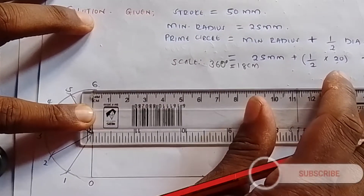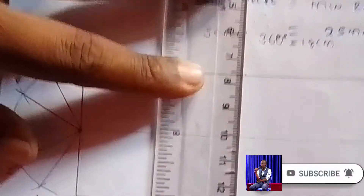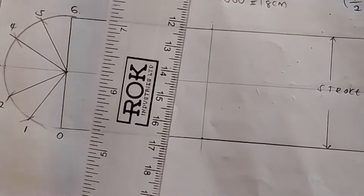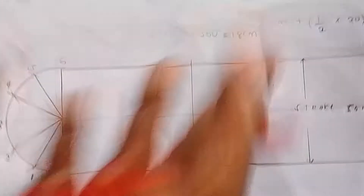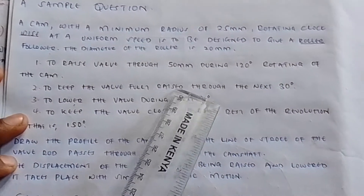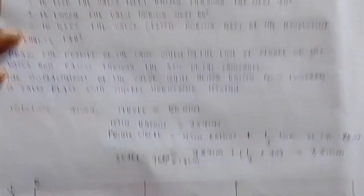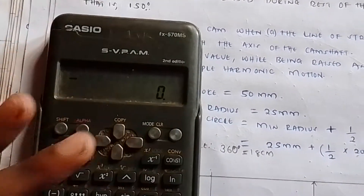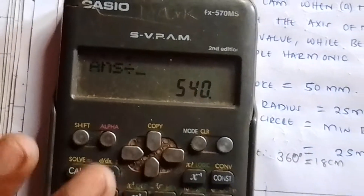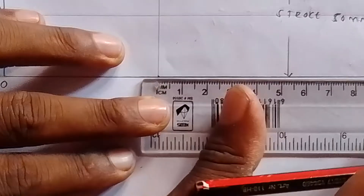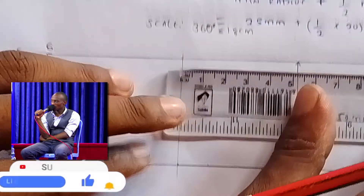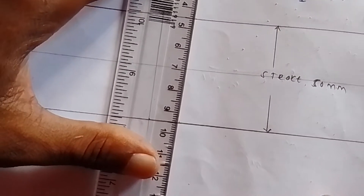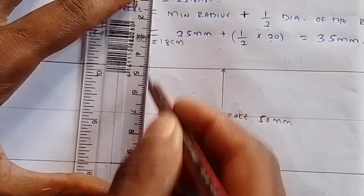From the top of the rise, do the same for the dwell of 30 degrees: 30 times 18 divided by 360 equals 1.5 centimeters. Put your ruler at this point and measure 1.5 centimeters, then draw a straight horizontal line across for the dwell.